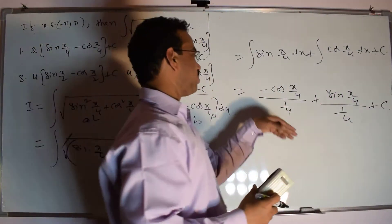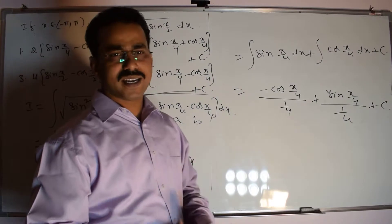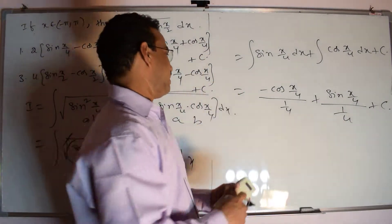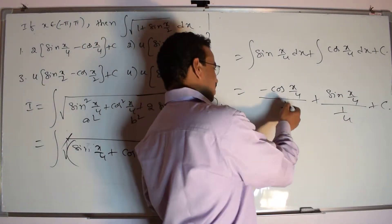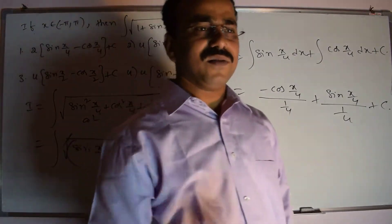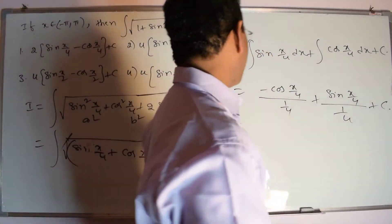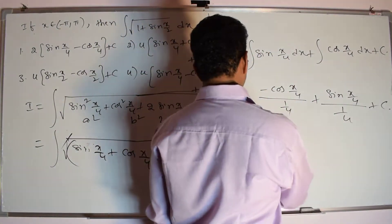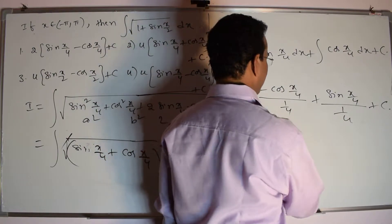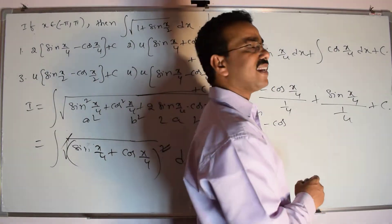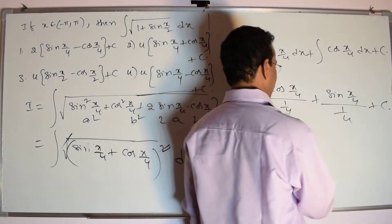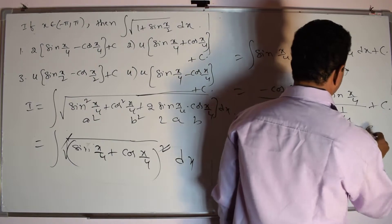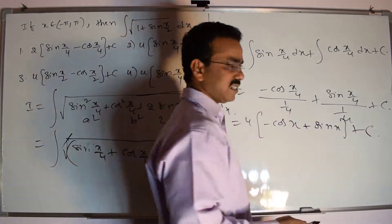Since 1/4 is in the denominator, it goes to the numerator as 4. So we get 4 outside, and the final answer is 4·(minus cos(x/4) plus sin(x/4)) plus C.